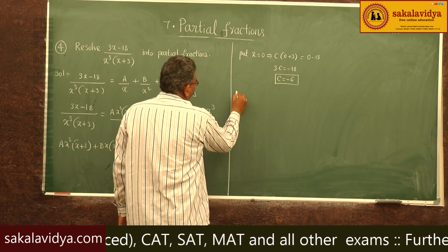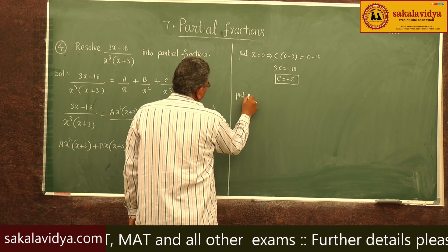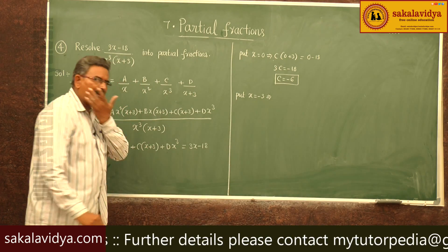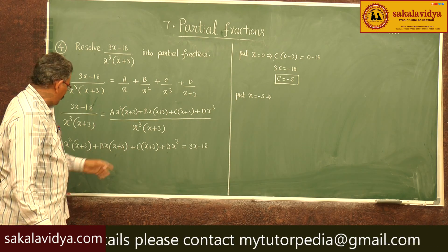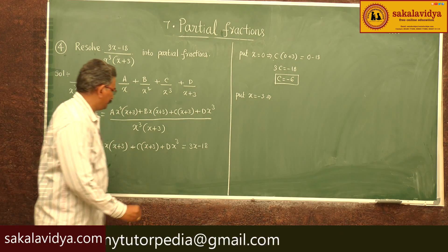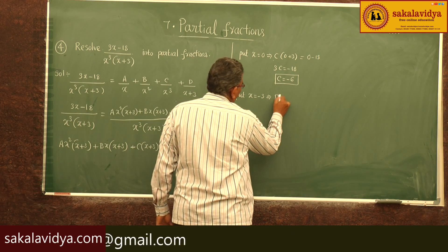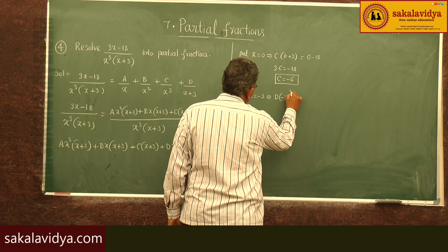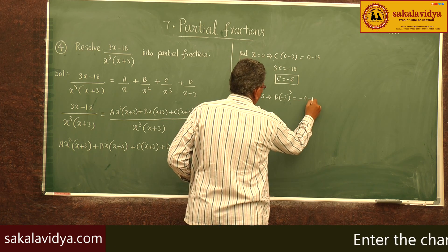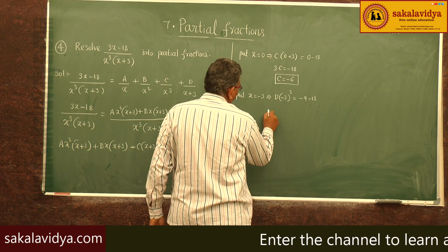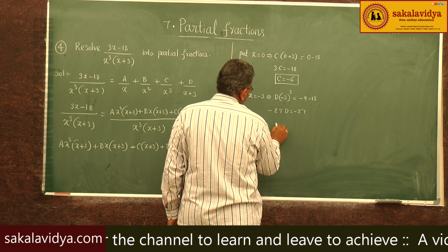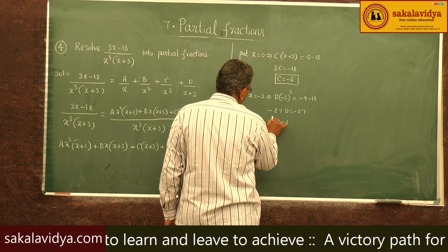Now put x equal to minus 3. The terms which contain (x plus 3) become 0. So D times (minus 3) cubed equals 3(minus 3) minus 18, giving minus 27D equals minus 27, therefore D equals 1.